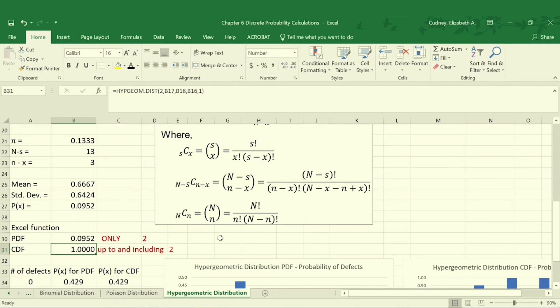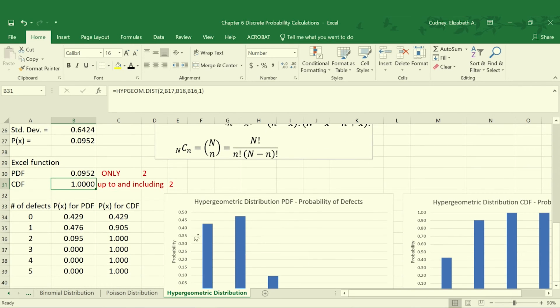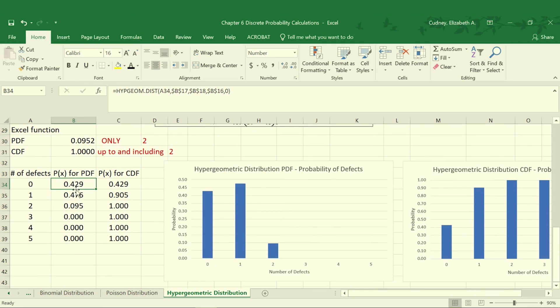As always, I would encourage you to graph these. So I've created graphs, so we only have 5 in our sample, so we could have 0 defective, 1, 2, 3, 4, or 5 defective. And then I've calculated the probability for each of those occurring. So the probability of 0 being defective is 42.9%, 1 being defective is 47.6%, and 2 being defective is 9.52%. And then the probability of 3, 4, and 5 is so minuscule that with 3 decimal places, it's essentially 0.